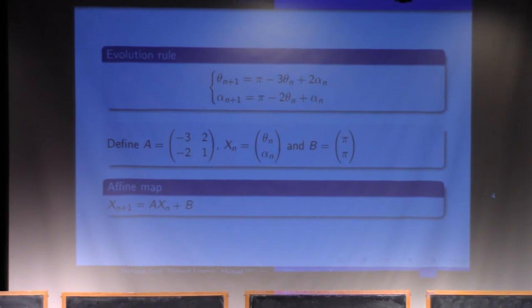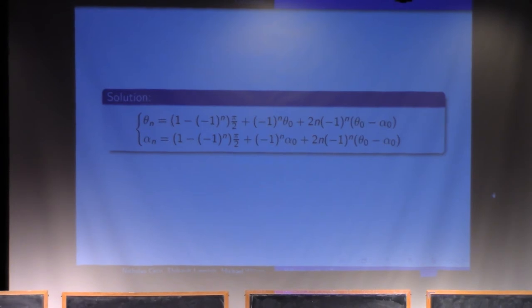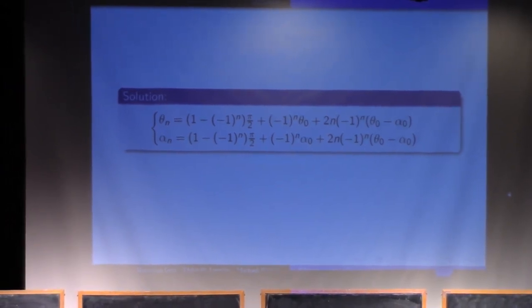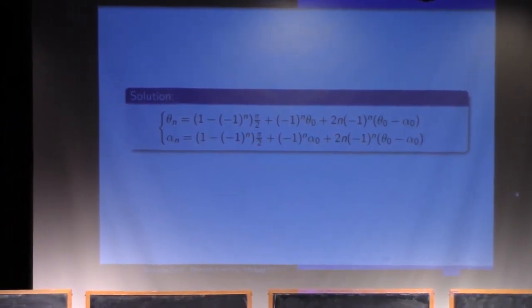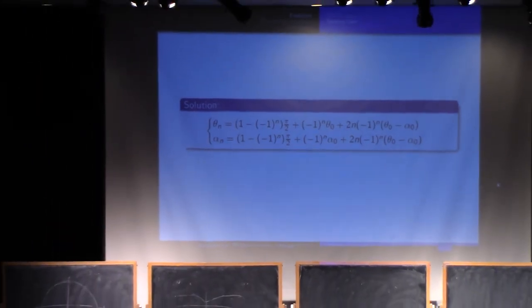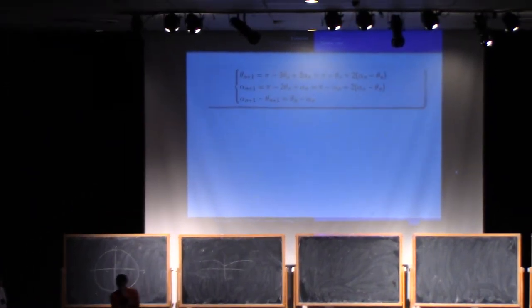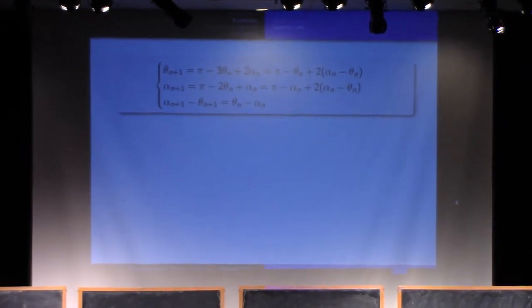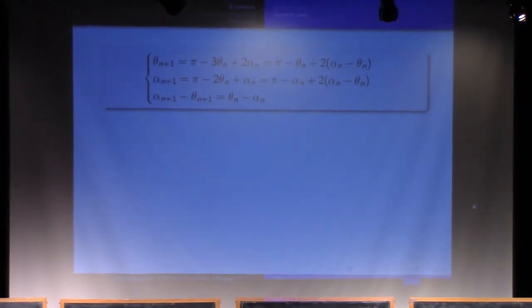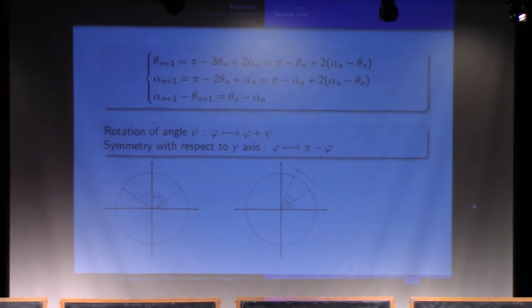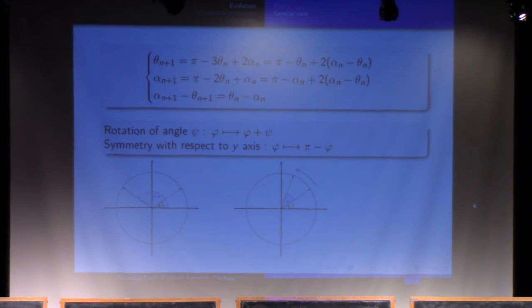We can get the solution to the evolution by brute force matrix calculation. But actually, I hate calculations, so I will show you how you can get this without any calculation, just some geometry. First, we just rewrite our system in this form. What you can see is that there are two parts in my evolution. First part, I just make a symmetry with respect to y-axis. Second part, I get a rotation of angle 2 alpha_n minus theta_n.